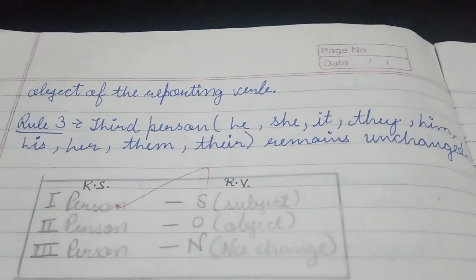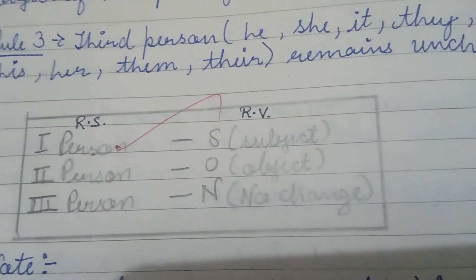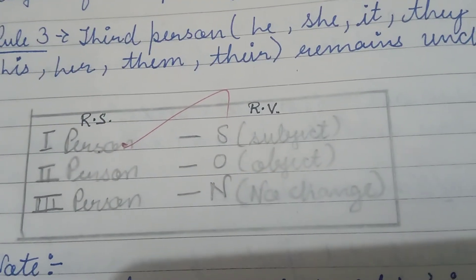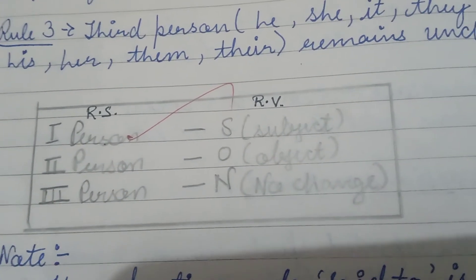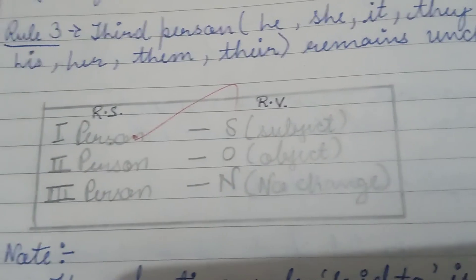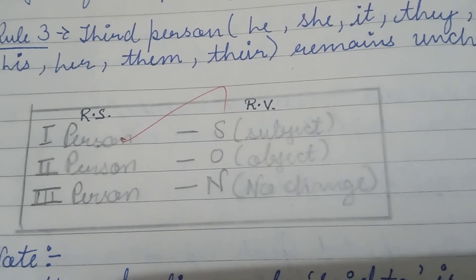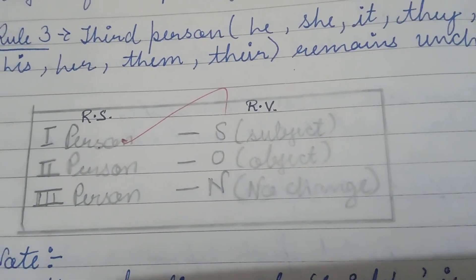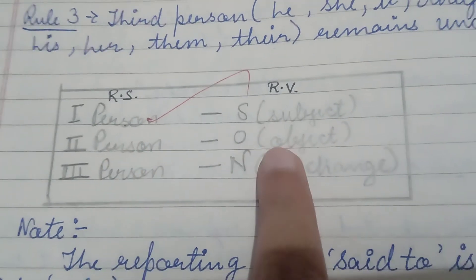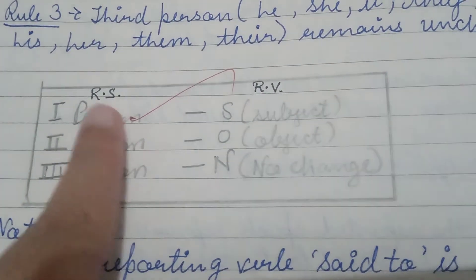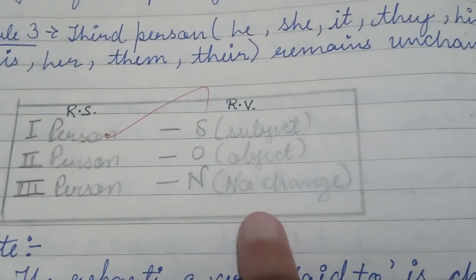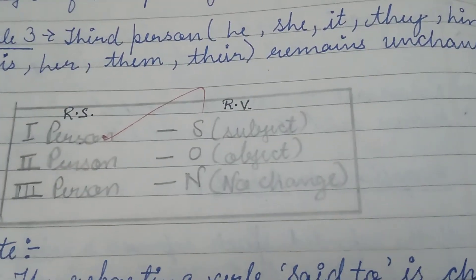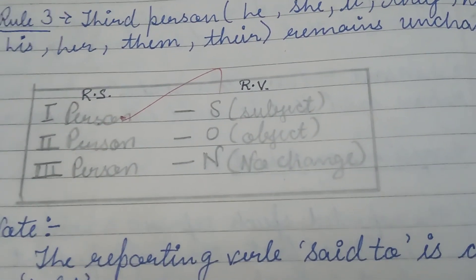A short formula to understand these three rules is mentioned in this box. RS refers to reported speech and RV refers to the reporting verb. Under RS we write first person, second person, third person. Under RV we write S, O, N — and in short this is known as the SON rule. So: if we have first person in the reported speech, it will change into the subject of the reporting verb; if we have second person, it will be changed to the object of the reporting verb; if we have third person, it will have no change. This box explains all the above three rules.